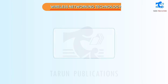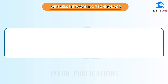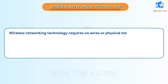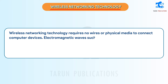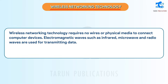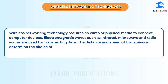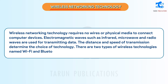Wireless Networking Technology requires no wires or physical media to connect computer devices. Electromagnetic waves such as infrared, microwave, and radio waves are used for transmitting data. The distance and speed of transmission determine the choice of technology. There are two types of wireless technologies: Wi-Fi and Bluetooth.